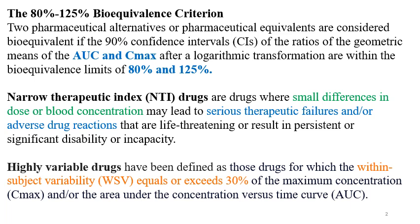This variability may be for Cmax, AUC, or both. These drugs show 30% or more within-subject variation. That means if you give these drugs to the same subjects multiple times, there will be variation in the plasma concentrations, leading to changes in Cmax and AUC. Within-subject variability means the variability occurs in the same subject only.